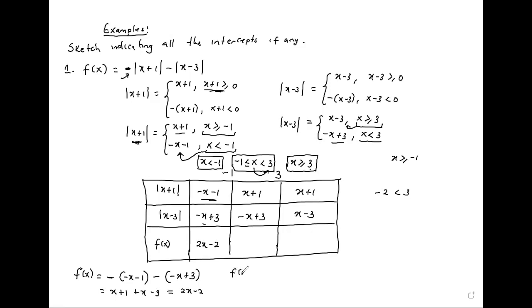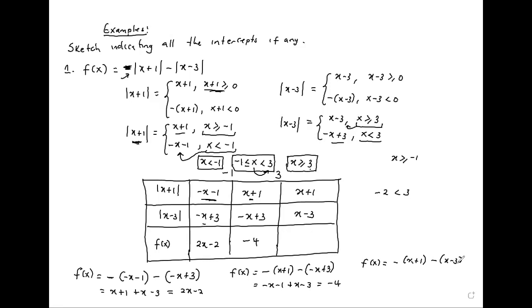When x is greater or equal to 3, f(x) equals x plus 1, minus x minus 3, giving negative 2x plus 2. So our three pieces are: 2x minus 2 for x less than negative 1; negative 4 for negative 1 less than or equal to x less than 3; and negative 2x plus 2 for x greater or equal to 3.